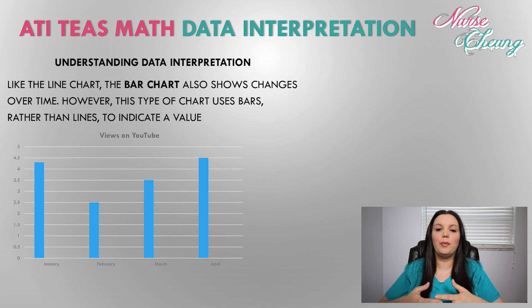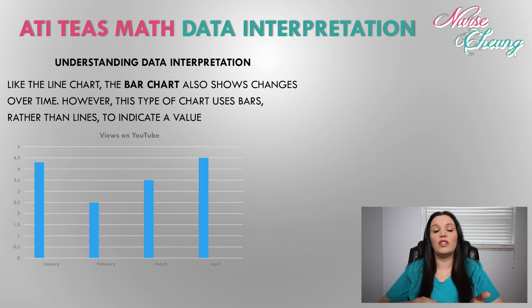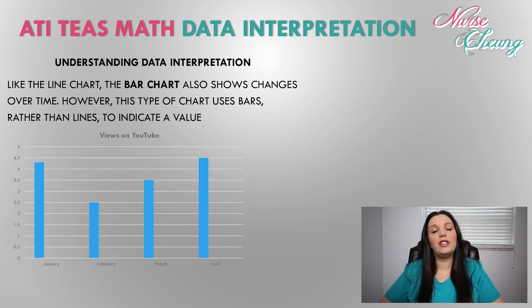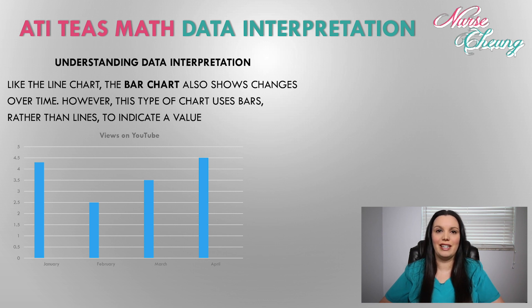Like the line chart, the bar chart also shows changes over time. However, this type of chart uses bars rather than lines to indicate a value. As you can see, this is the exact same chart we used in the line chart example, but we're now using bars to show the different amounts of YouTube views for January, February, March, and April.